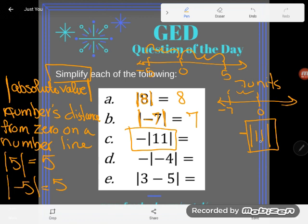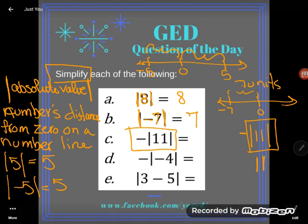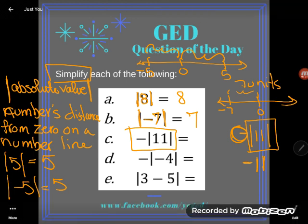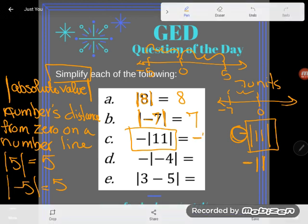So how far is 11 from zero on a number line? Of course it's 11. And now this negative outside means whatever answer we get we need to then negate it. So I drop my negative sign and I see that I do end up with a negative 11.